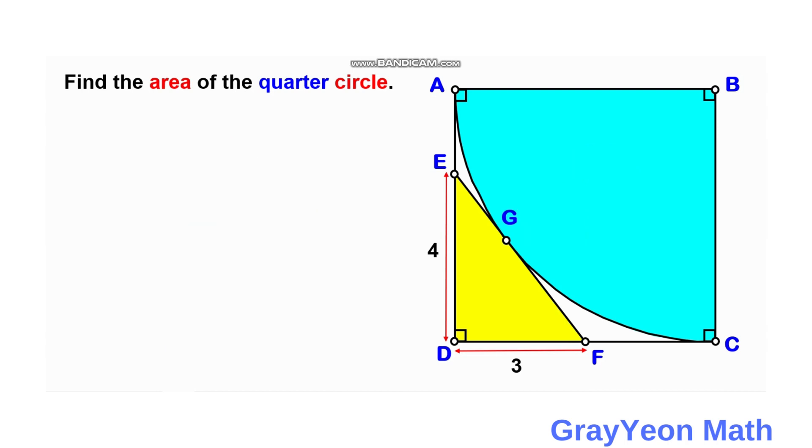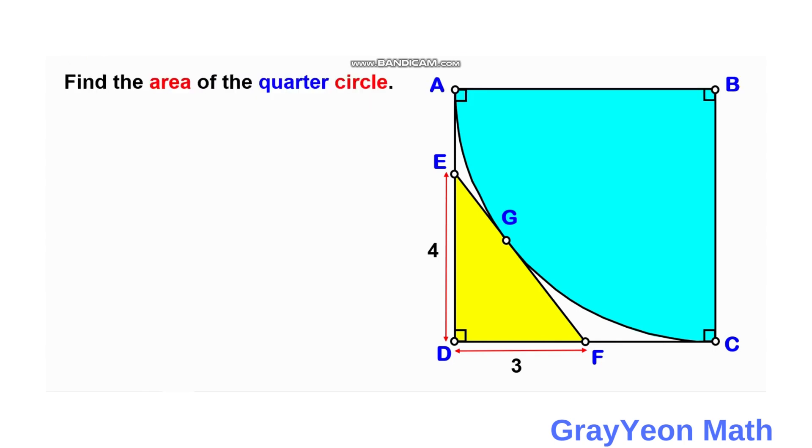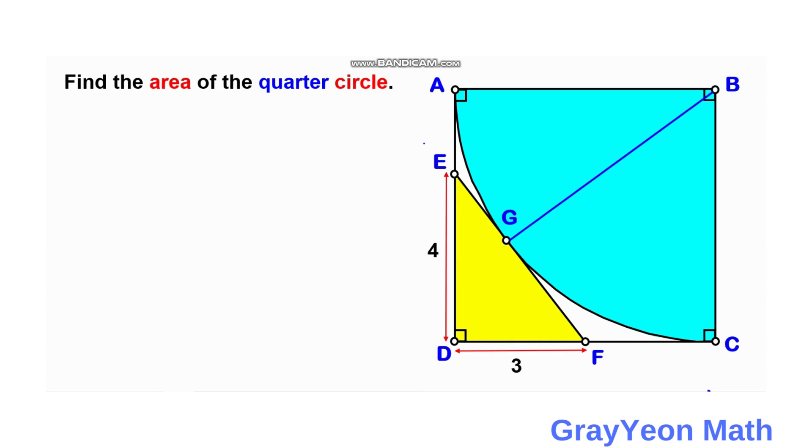First thing that we need to notice is that we can actually connect this point G to the center of this quarter circle. Since we are interested in finding the area of this quarter circle, we need to find the radius of this quarter circle.